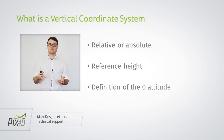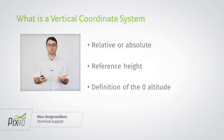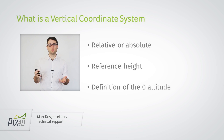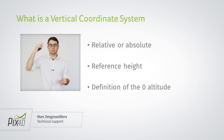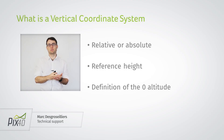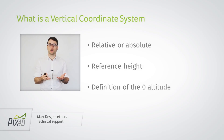What's a vertical coordinate system? It's a way to measure the altitude. This can be done either in a relative way or an absolute way. A relative way is something that would change from time to time. One good example is when the drone is recording the altitude relative to the height above ground. That means it's measuring the altitude with respect to the initial position at which it started flying. This initial position can very well change from one project to the next, and that means the coordinates will change from one project to the next. This is what we mean by relative altitude.